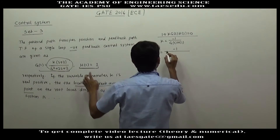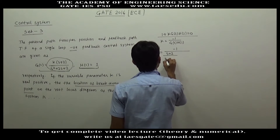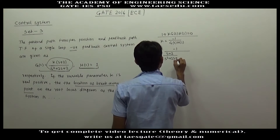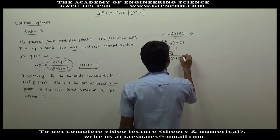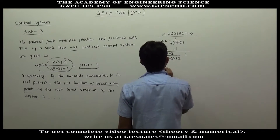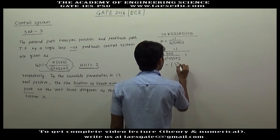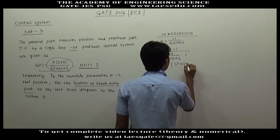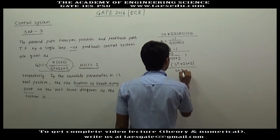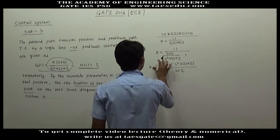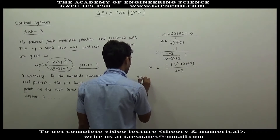K will equal s(s plus 2) divided by (s² plus 2s plus 2), and H(s) equals (s² plus 2s plus 2) divided by (s plus 2). So dk/ds is to be set equal to 0.